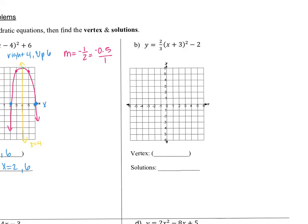Let's move on to b here. So b is also a fraction for the slope, but let's start with the vertex. So we have a positive 3 and a negative 2. So a positive 3 on the inside means left 3, down 2. So if I were to go left 3, down 2, it would be right here at negative 3, negative 2.